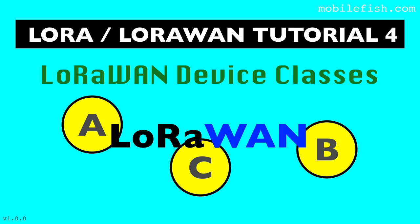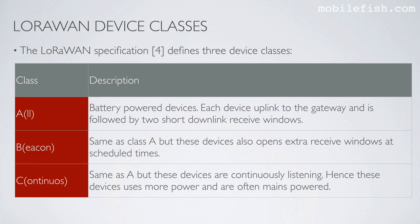In this tutorial, I will explain what LoRaWAN devices are. The LoRaWAN specification defines three device classes: Class A, which stands for ALL; Class B, which stands for BEACON; and Class C, which stands for CONTINUOUS.